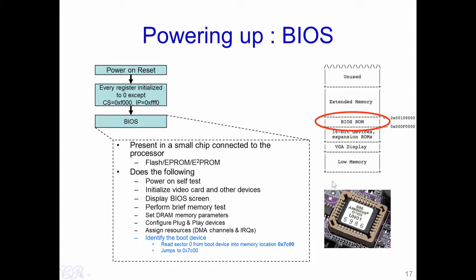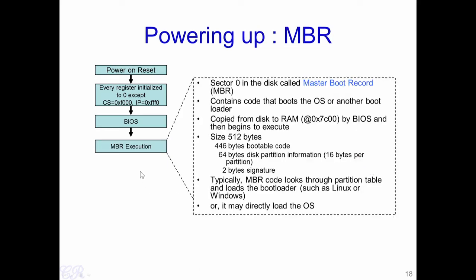Note that 0x7C00 is a memory location in the low memory region of the RAM. The BIOS copies sector 0, which is typically 512 bytes, from the boot hard disk into memory location 0x7C00. At the location 0x7C00 we would have 512 bytes of code which help in booting the operating system. The BIOS then causes a jump to 0x7C00, meaning the code present at that location in low memory will begin to execute. This memory — copied from sector 0 of the hard disk into RAM — is known as the MBR or Master Boot Record.